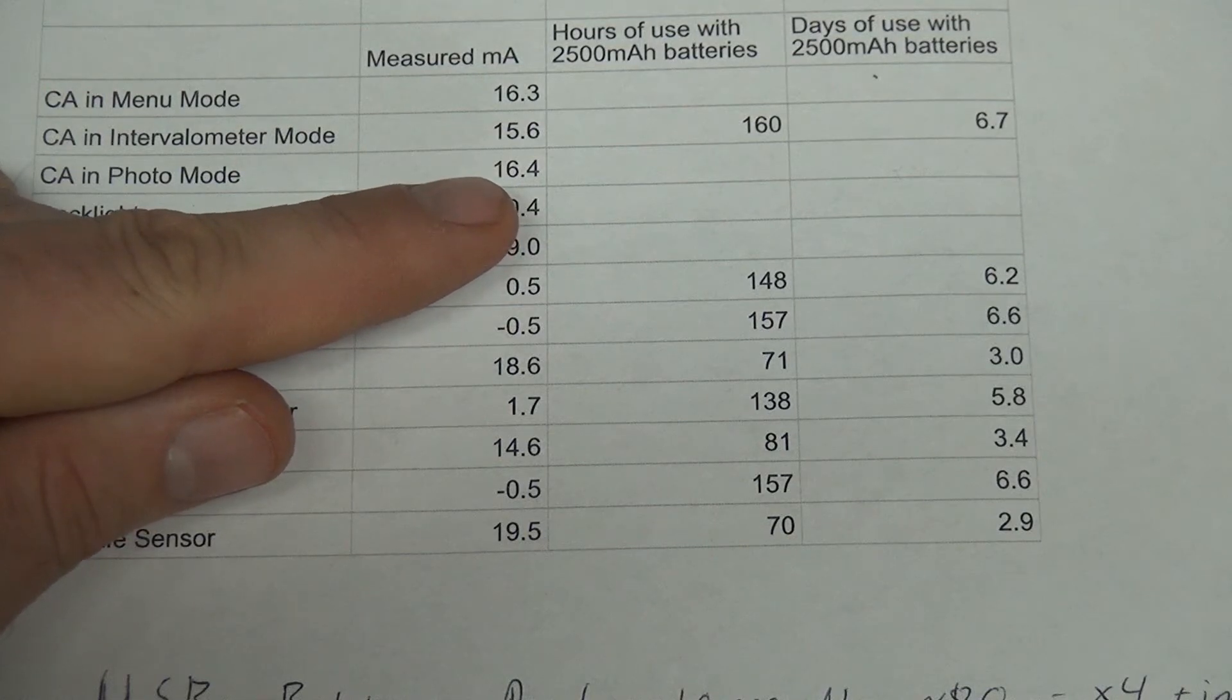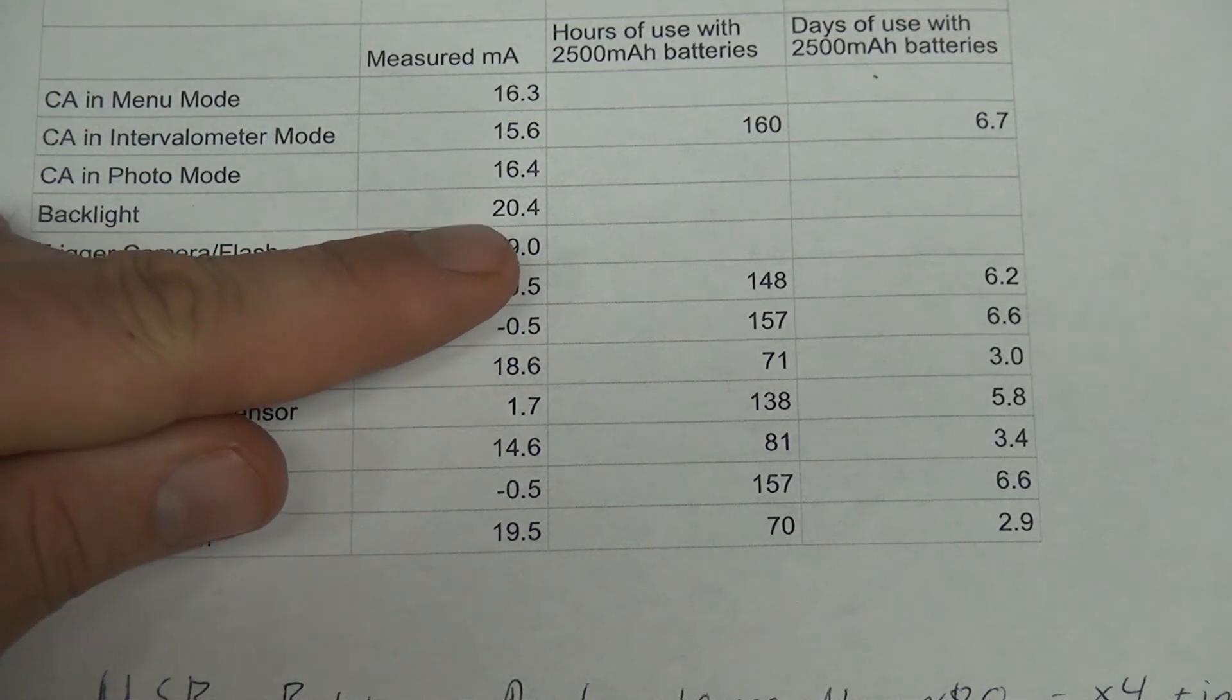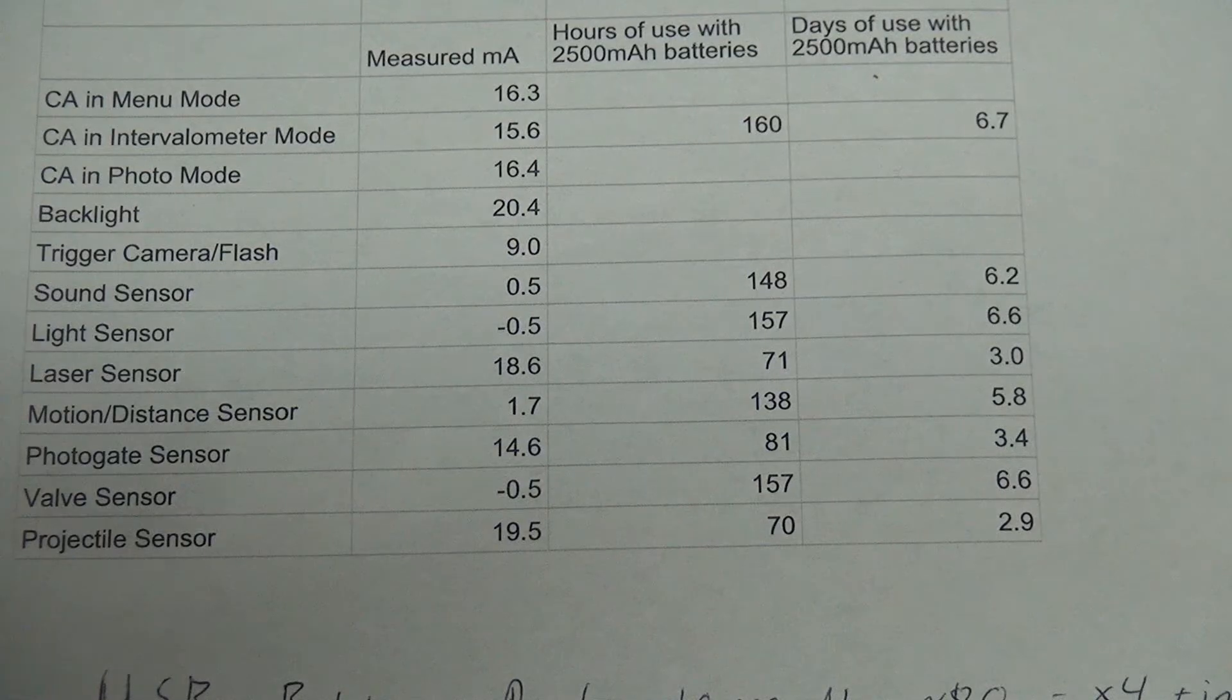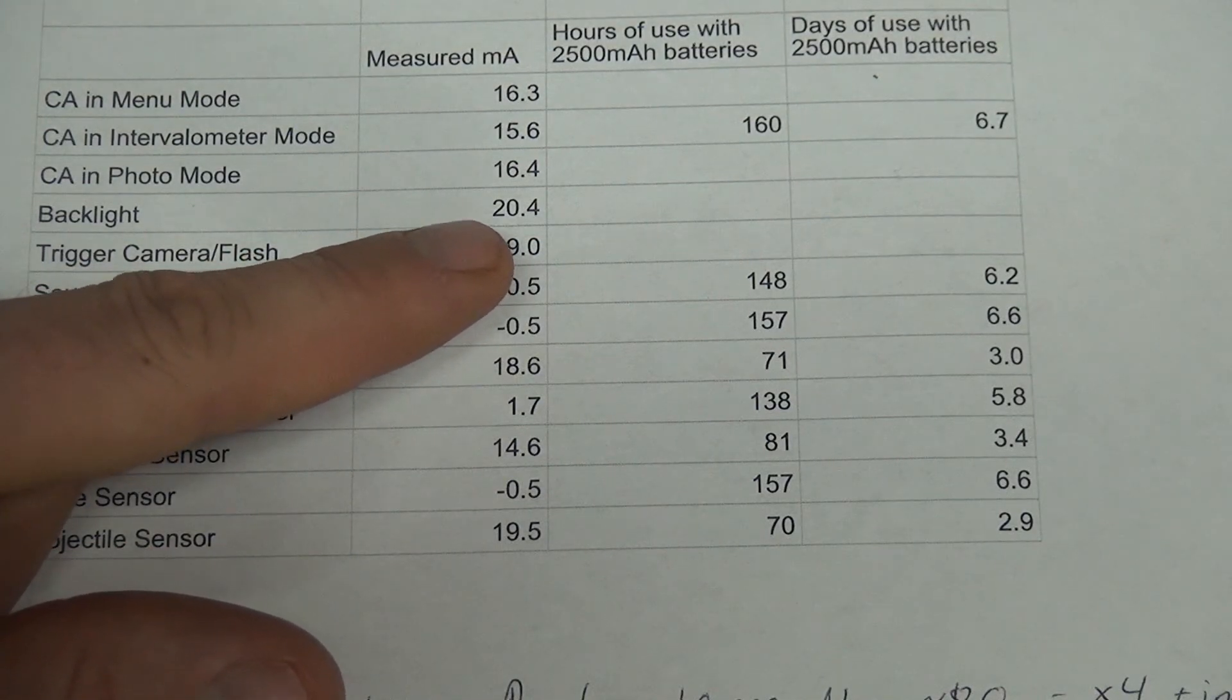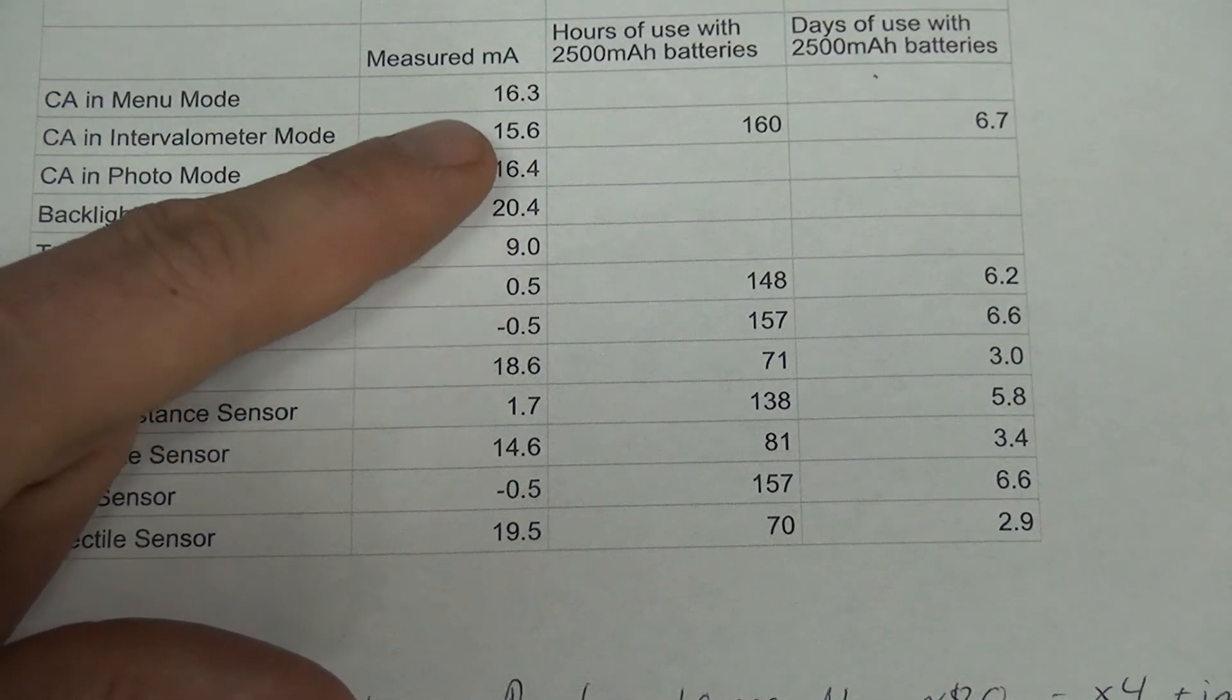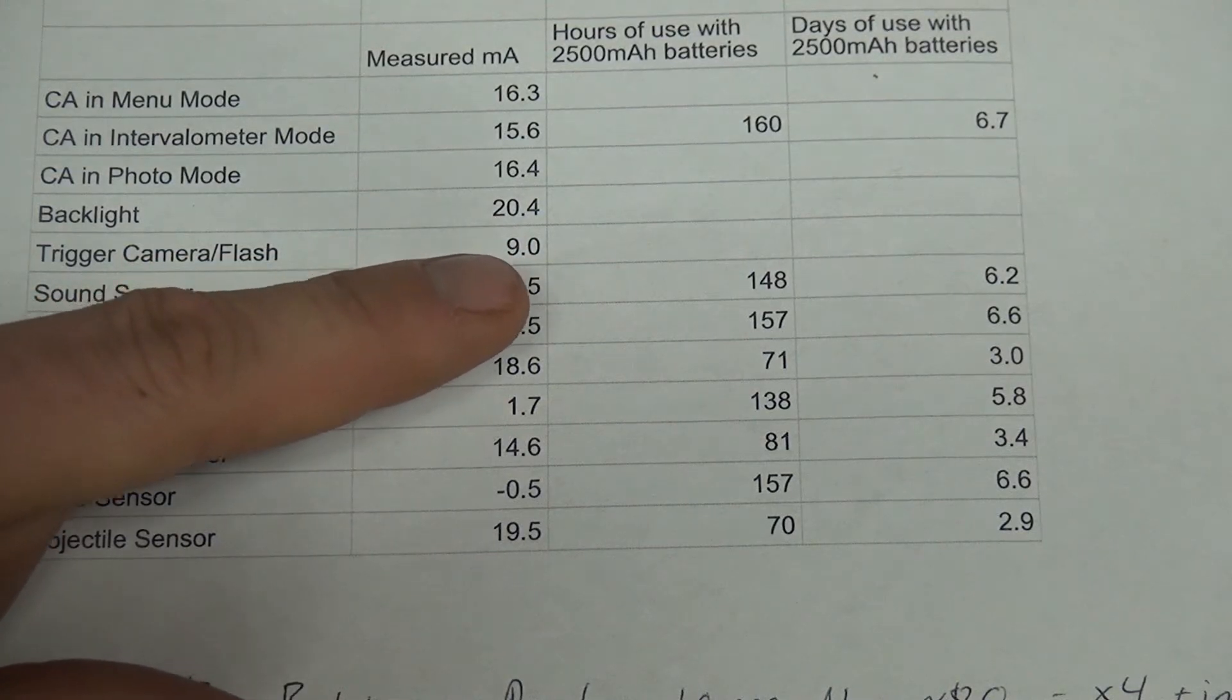There's definitely things in software you could do to save some power, but the Camera Axe is really targeted at high-speed photography and that kind of thing. You often want the fastest reaction times. So you want the microcontroller really ready to go at a moment's notice. The rest of these are the power consumption of different items. The backlight is using 20.4 milliamps. That's more than the rest of the Camera Axe system combined. You definitely want to turn off the backlight if you want to save power.